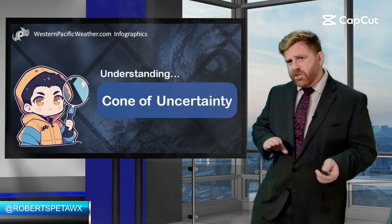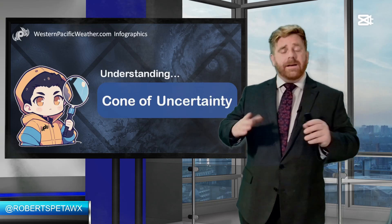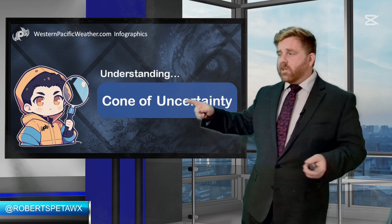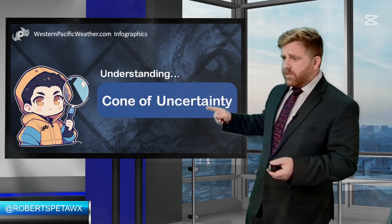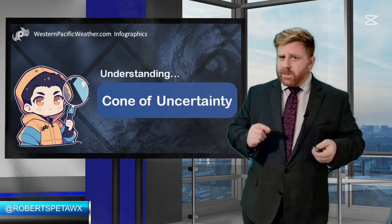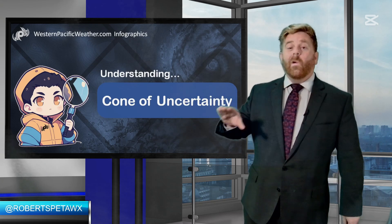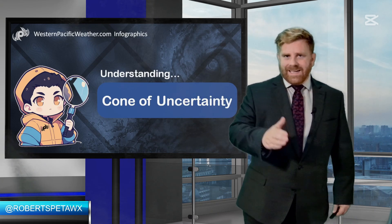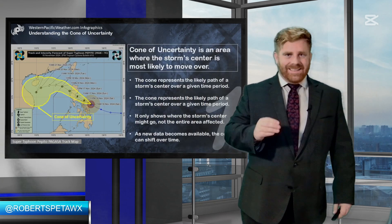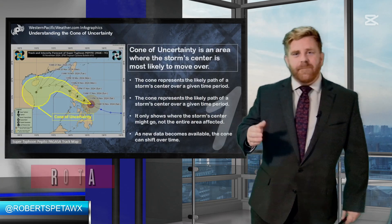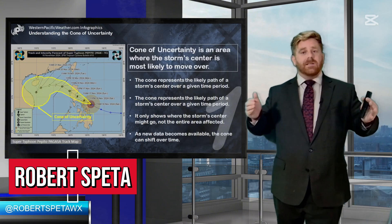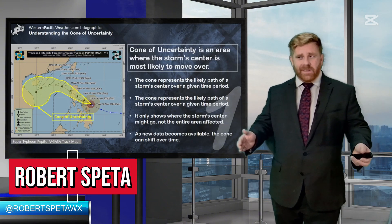The cone of uncertainty is something that is used in most tropical updates, and it's important to know what exactly it is and what exactly it is not. I'm meteorologist Robert Spetta — let's talk about this.